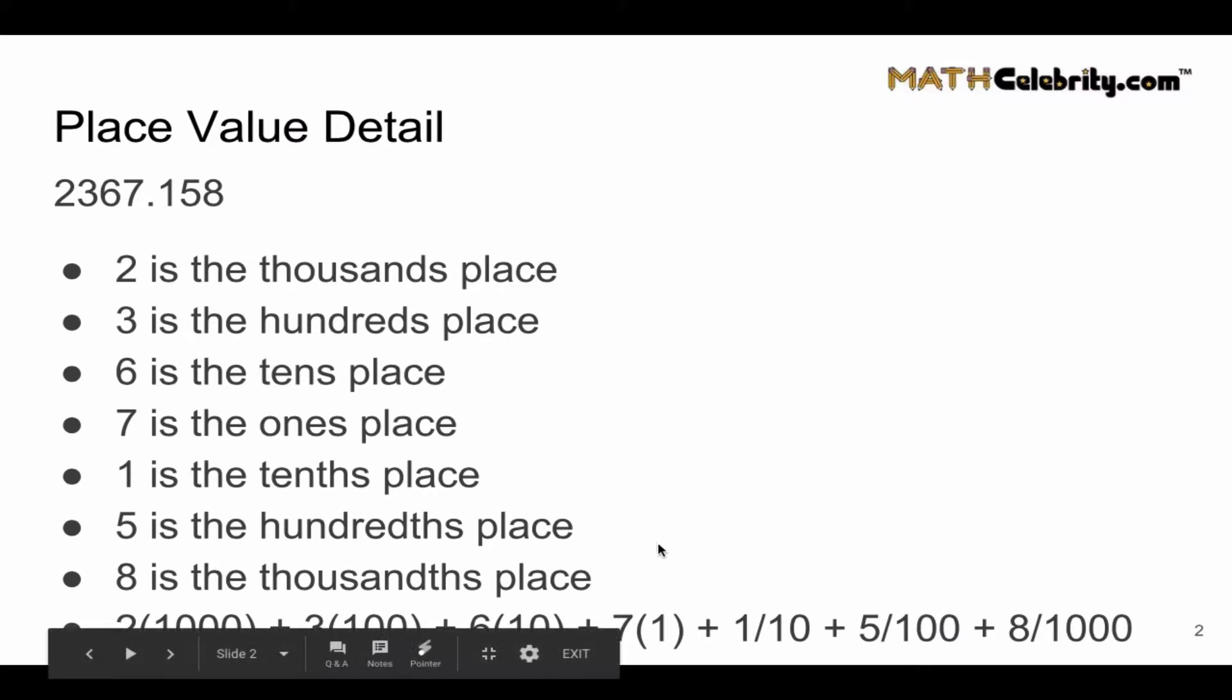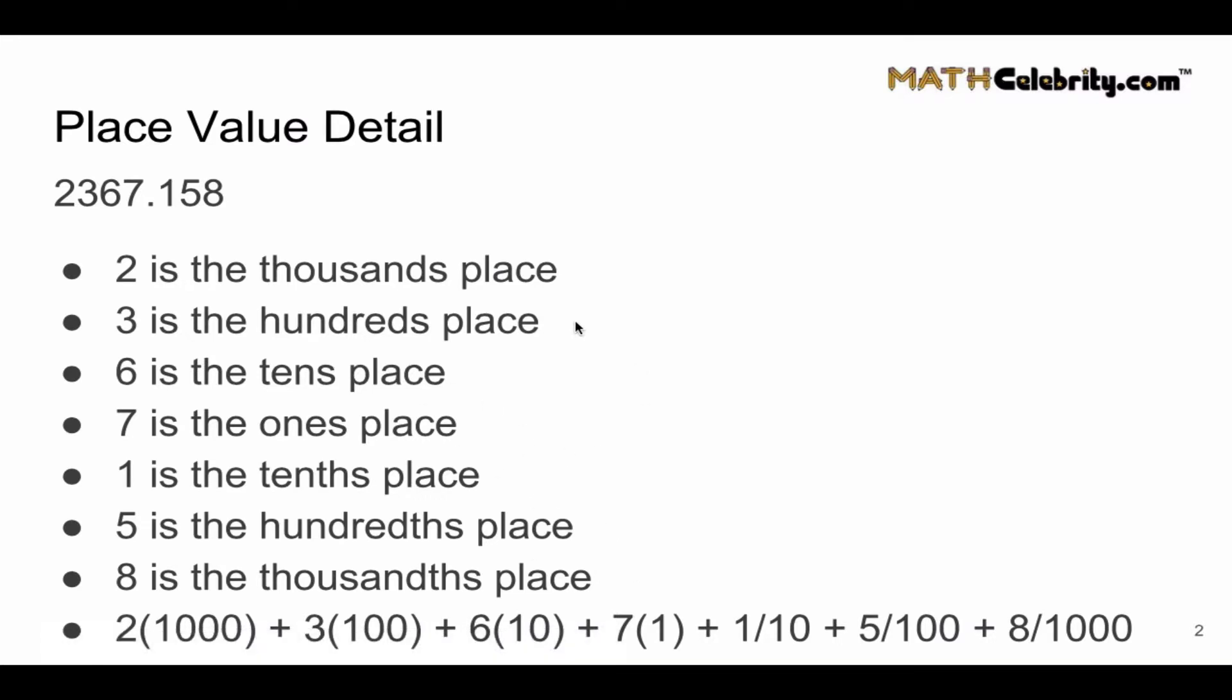Now notice 10 to the zero power is 1, so we've got 6, we've got 7 as the ones place, 6 is the tens place, and 3 is the hundreds place. So we take the number times the value of the place value multiplier.